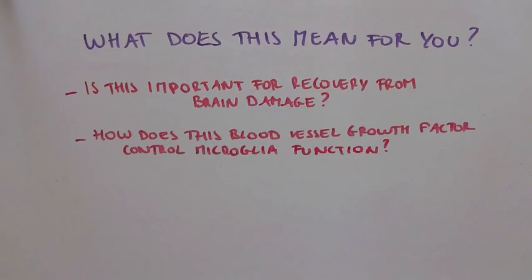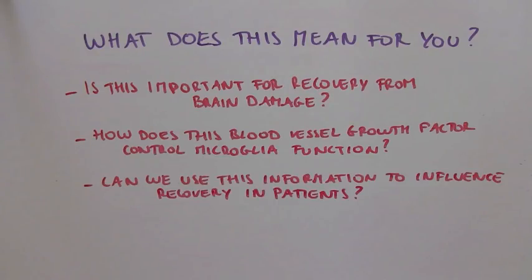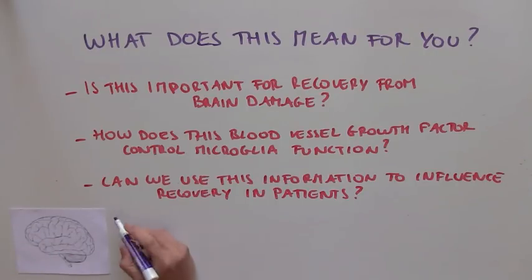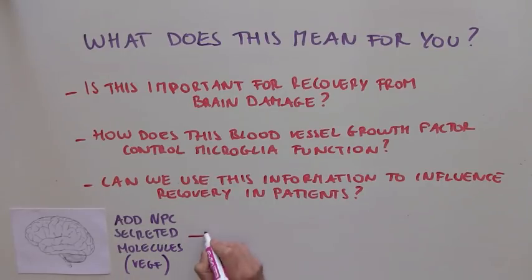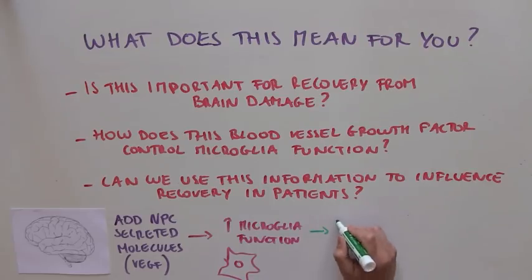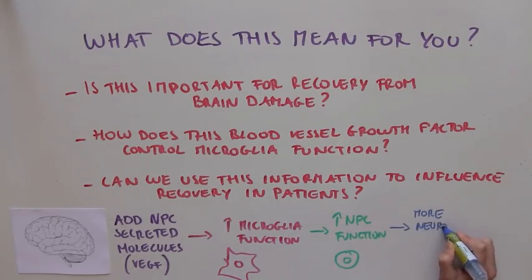How does this blood vessel growth factor control microglia function? And of course, the ultimate question, can we use this information to influence recovery in patients? Can we somehow find a way to add more NPC-secreted molecules, including VEGF, into patient brains to promote microglia function, in turn boosting NPC function, and possibly neuron growth?